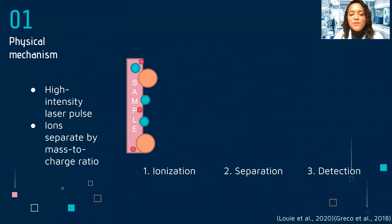First, the physical mechanism. The analytes — meaning the sample — are co-crystallized with a matrix material that absorbs laser light and transfers energy to the analyte, releasing it into a gas phase.